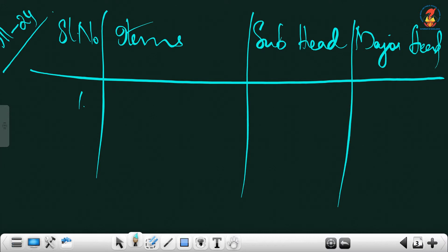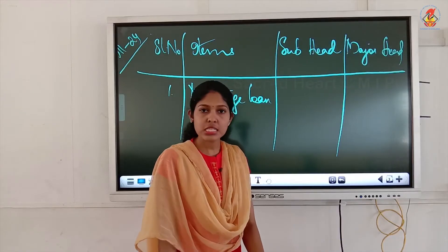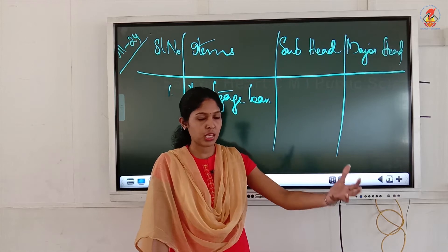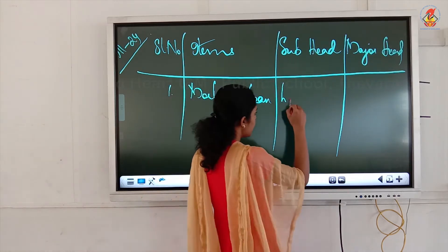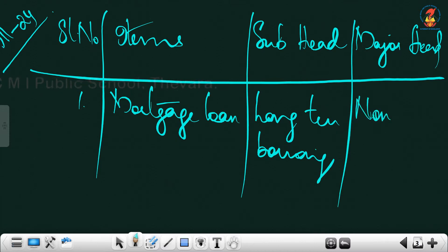This is a combined question. The first item is mortgage loan. Mortgage loan means something you have taken, so it comes under the subhead long-term borrowings and the major head is non-current liabilities.